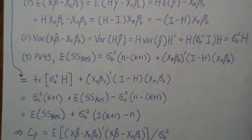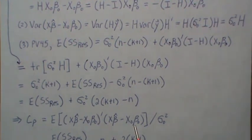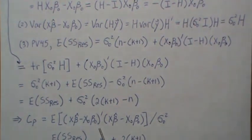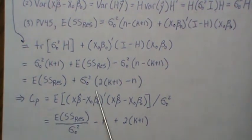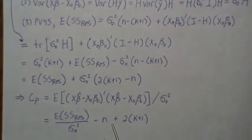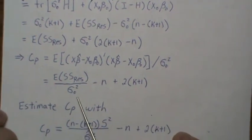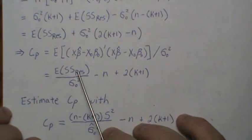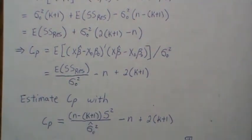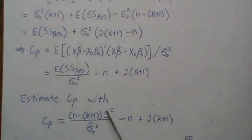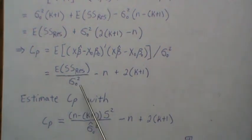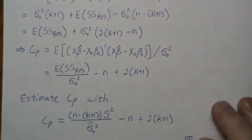What we've shown is that Mallow's CP, by definition, is the mean squared prediction error scaled by the true error variance, and we derived that this equals SSR_candidate / sigma naught squared - n + 2(k+1). To estimate this in practice, we estimate sigma naught squared using the MSE from the largest candidate model, and use the sum of squares residual from the current candidate model. Since s squared equals SSR divided by (n - k + 1), these cancel leaving just the SSR. That's Mallow's CP.